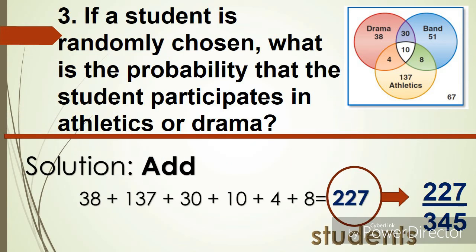Number 3. If a student is randomly chosen, what is the probability that the student participates in athletics or drama? This is the solution. We're going to identify how many students participate in drama and athletics. In drama, we have 38. In athletics, we have 137. We can also add 30, 10, 4, and 8. Then it equals 227. Therefore, the probability that the student participates in athletics or drama is 227 over 345.